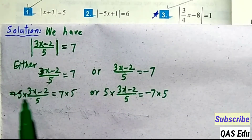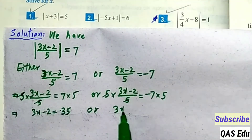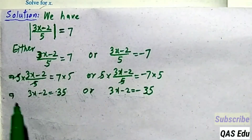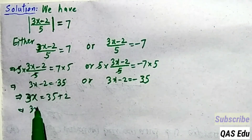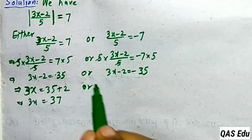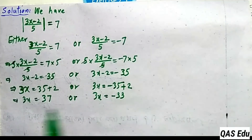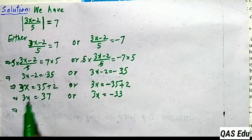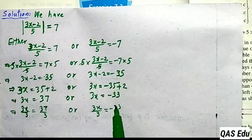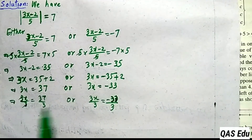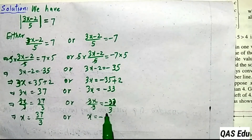Multiplying both equations by 5: the 5s cancel. First equation gives 3x minus 2 equals 35. Second gives 3x minus 2 equals minus 35. Moving minus 2 to the right: 3x equals 35 plus 2 equals 37, and for the other: minus 35 minus 2 gives minus 37. Wait — that gives minus 33. Dividing both sides by 3: x equals 37 over 3 and x equals minus 11.